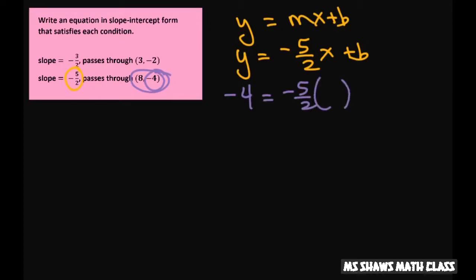Your x is 8 plus b. Now we're going to solve for b. So you have negative 4 equals, 2 goes into 8 4 times, so 4 times negative 5 is negative 20 plus b.